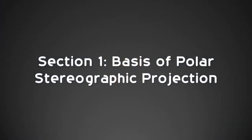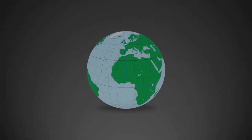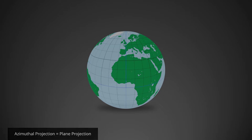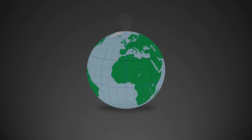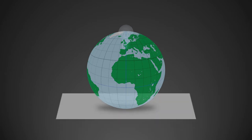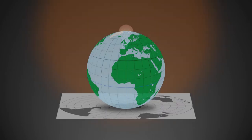Section one: basis of polar stereographic projection. Polar stereographic charts are produced using azimuthal projection. A light source is placed at the pole of the reduced earth, and paper is placed on the opposite pole. When the light is turned on, the shadow is cast on the paper.